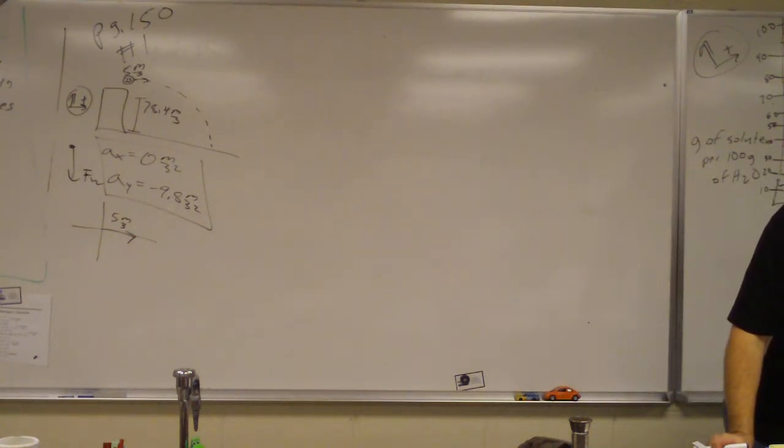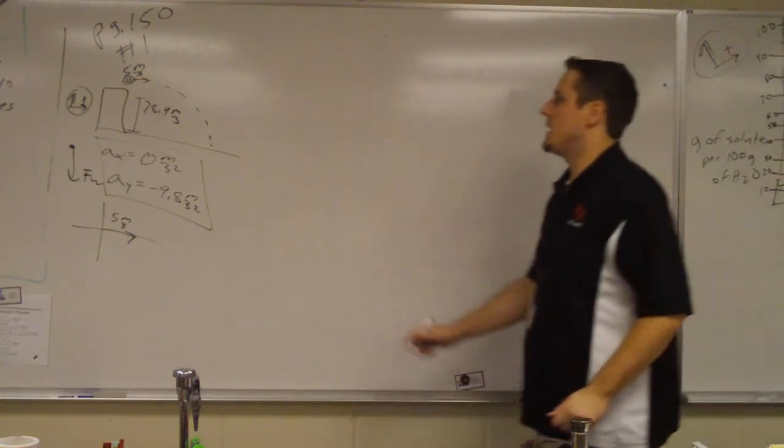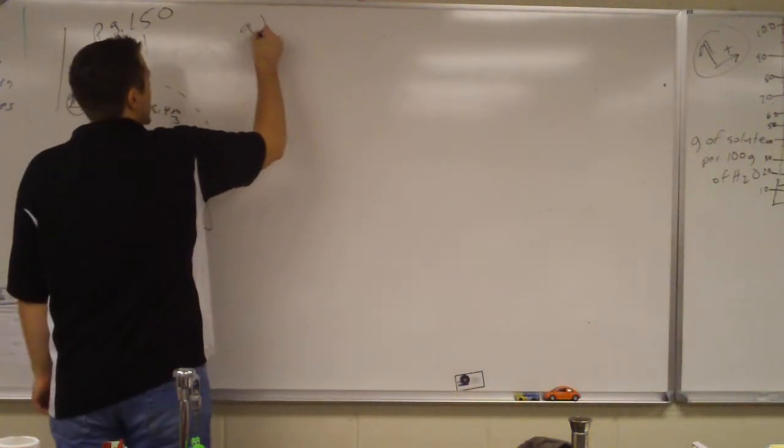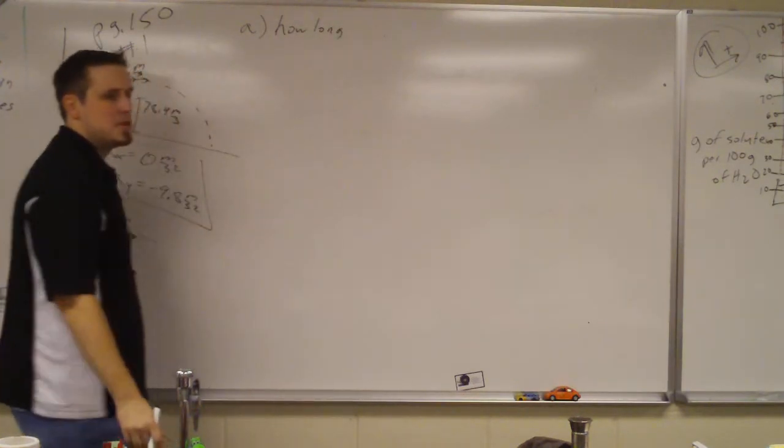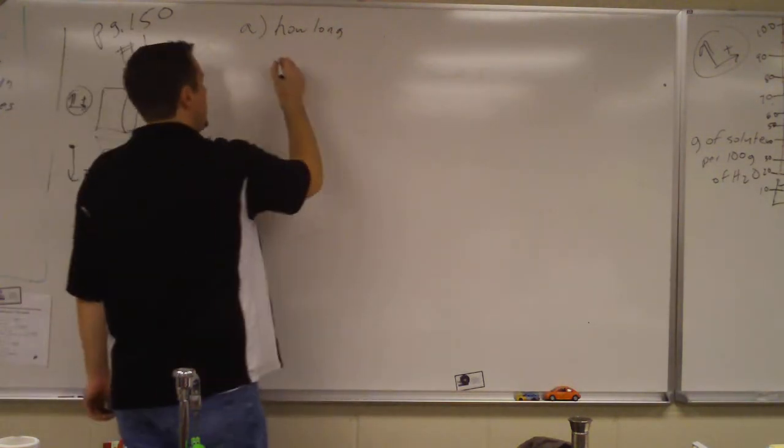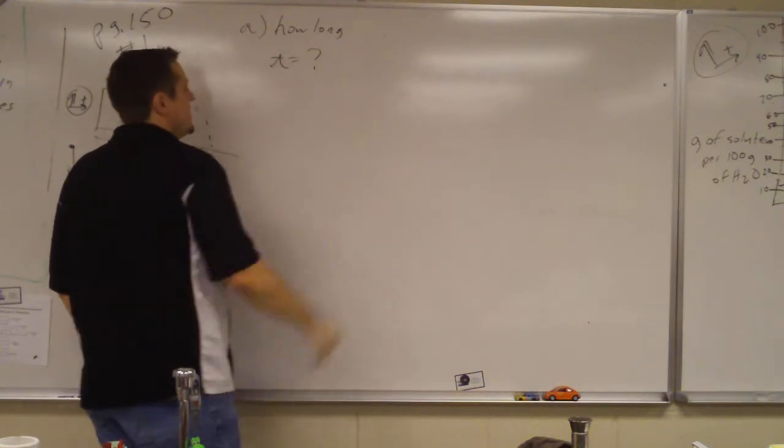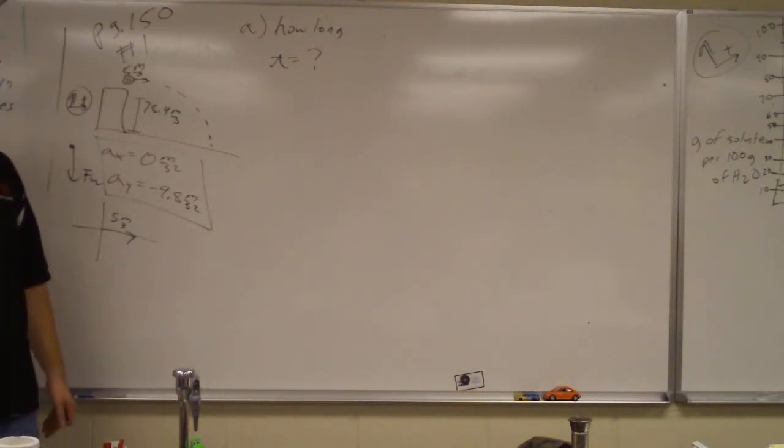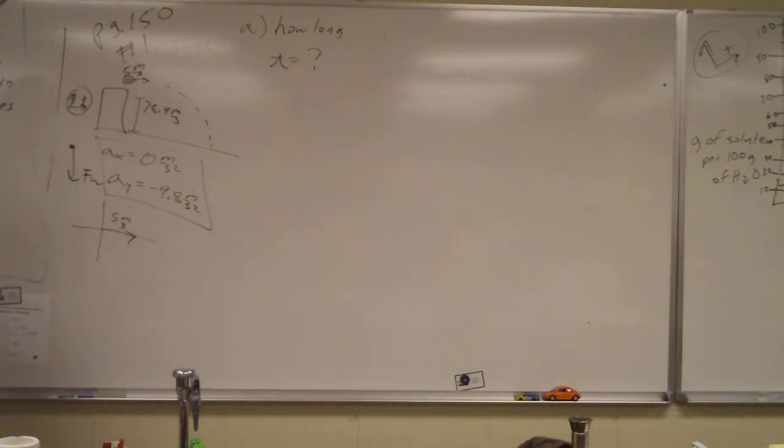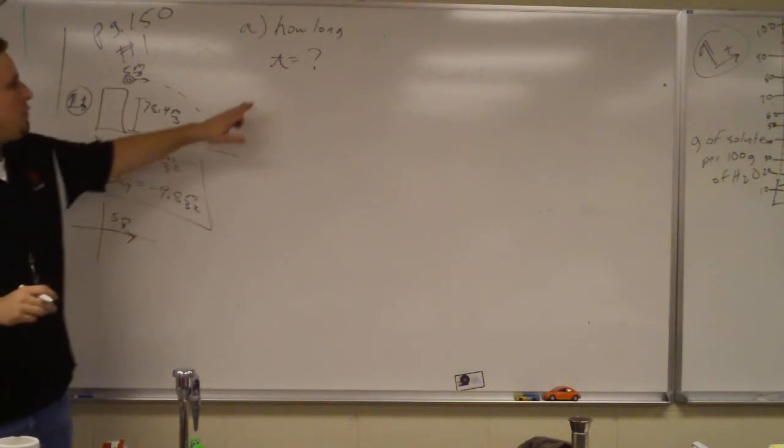It asks us, how long does it take the stone to reach the bottom of the cliff? So part A is asking how long until it hits the ground. What does that refer to? Time. So what do you think we're going to do? We're going to write our five variables. If we can fill in three, we can solve. Now we have to be careful. For time.